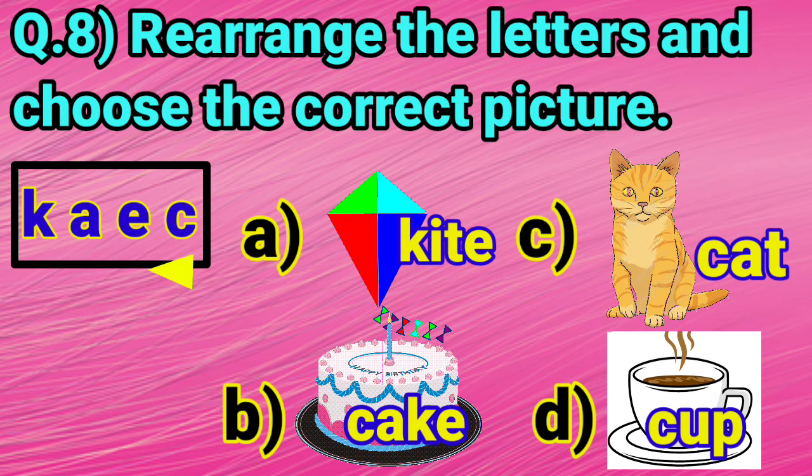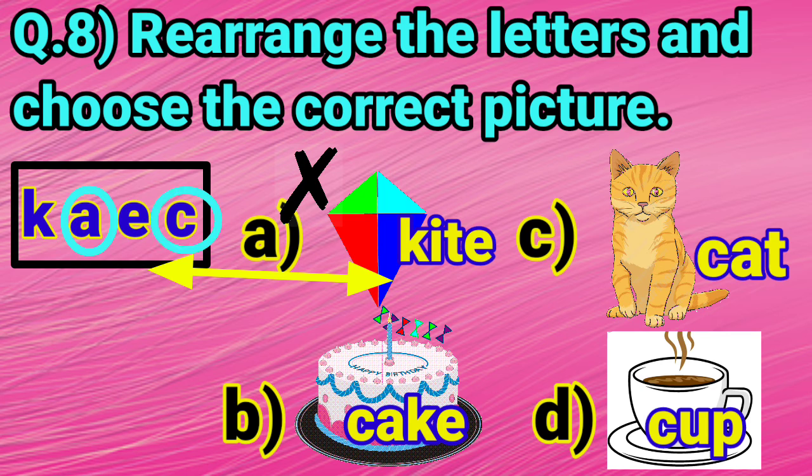Let's match with option A. K and K are same. Again, E and E are also same. But, we do not find letters A and C in the word kite. So, this option is not correct.